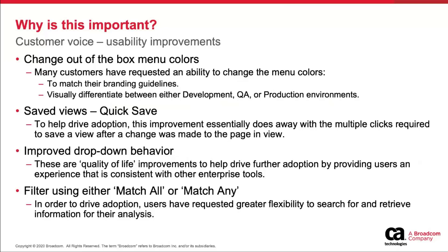Let's talk about why we did these. The first item — changing the out-of-the-box menu colors — many customers have been requesting the ability to change these menu colors for two things: one was to match their branding guidelines, and the second, most prominent use case, is to help users visually differentiate between a production and a lower environment, like a development or QA environment.